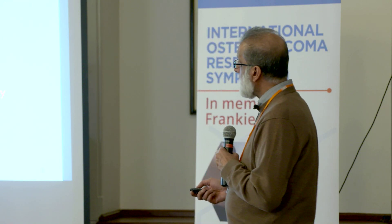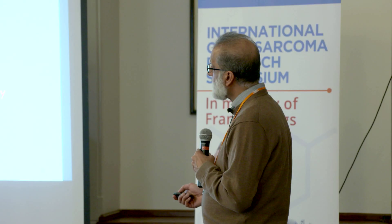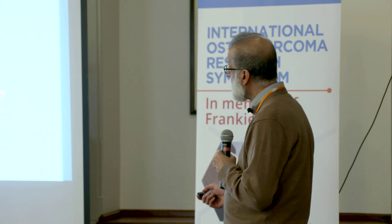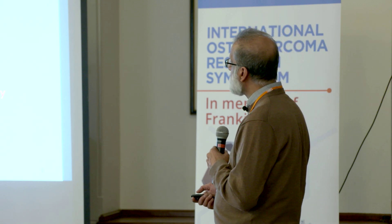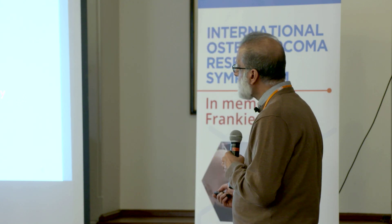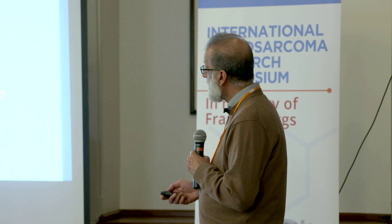When we talk about staging, we divide this into local and distant. Local involves the primary tumor and skip metastases, which allows us to identify where the surgeon needs to make his osteotomy to resect the bone. Extraosseous staging is to look at the relationship to neurovascular structures to see if limb salvage is possible or if amputation is required. For distant staging, all patients have an unenhanced chest CT, and then either a bone scan or, increasingly, whole body MRI — plus the question about FDG-PET, which I'll address at the end.